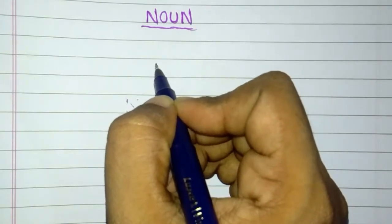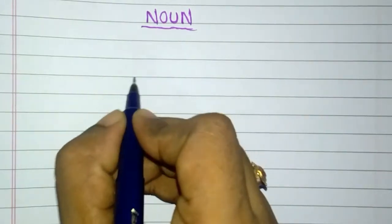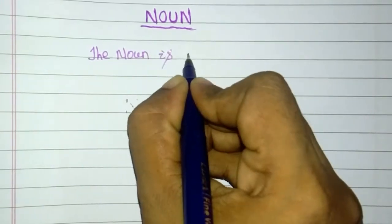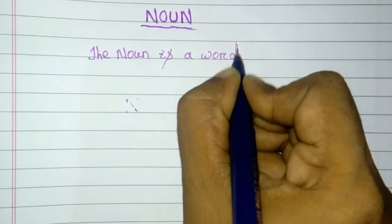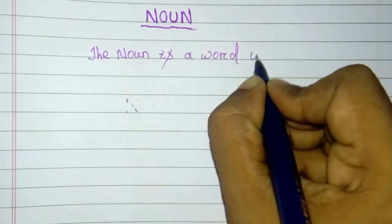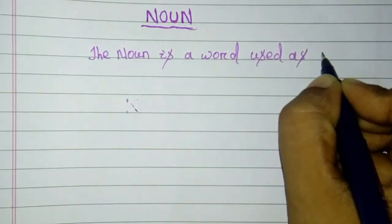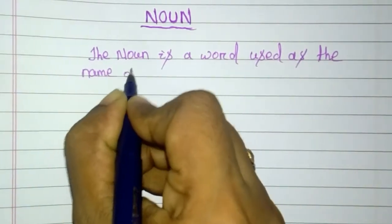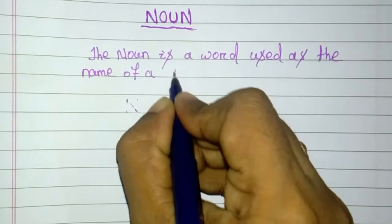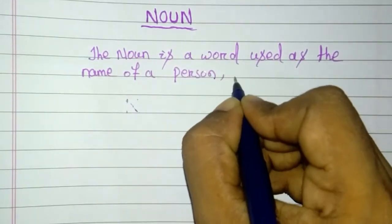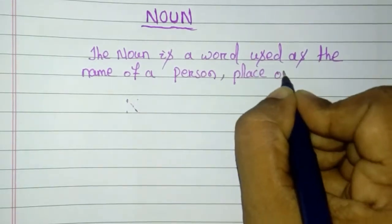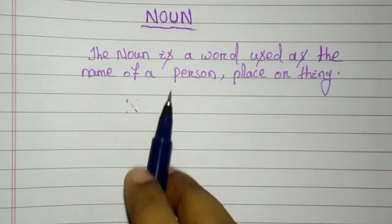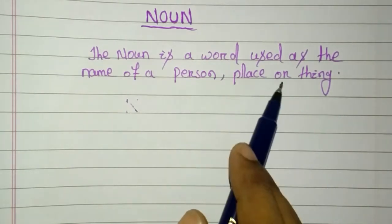So let me explain you what is noun. The noun is a word used as the name of a person, place or thing. Simply if we say, all the naming words are known as noun.